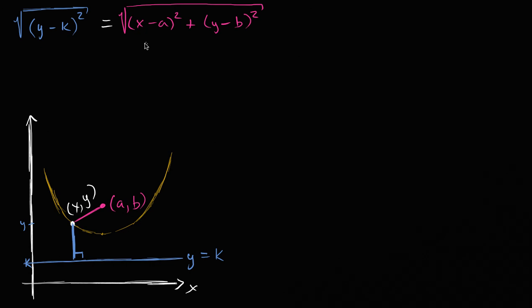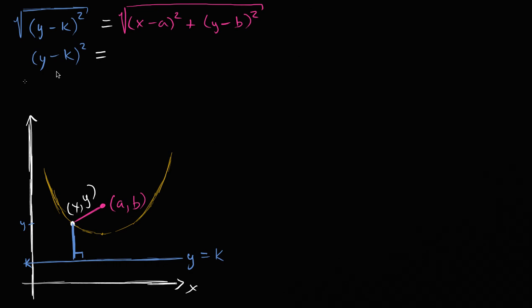This equation is actually the equation of a parabola — it doesn't look like it, it looks really hairy, but it is. To show that, we just simplify it. The simplest first step is to square both sides to get rid of the radicals. Squaring both sides gives: (y minus k) squared equals (x minus a) squared plus (y minus b) squared.